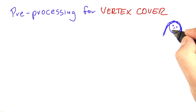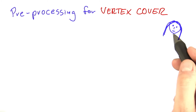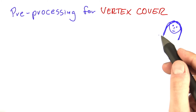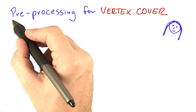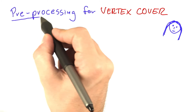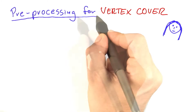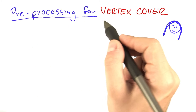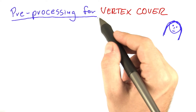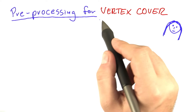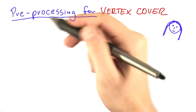Alice is medium happy right now, and our goal is of course to make her more happy here. Let's find out if we can find some good rules for preprocessing a graph for which we want to solve vertex cover.